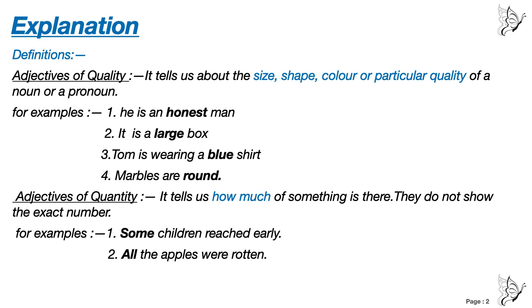You cannot count some. Can you count enough? I have enough water to drink — can you count water like one, two, three, four? No, you cannot. So in adjective of quantity, always remember it is uncountable. It tells us how much of something is there; they do not show the exact number. You cannot say two children or three children when we say some children or many children. These words indicate quantity.